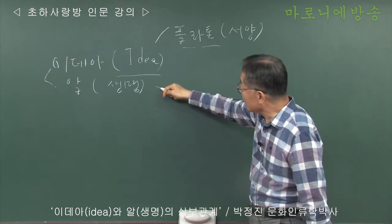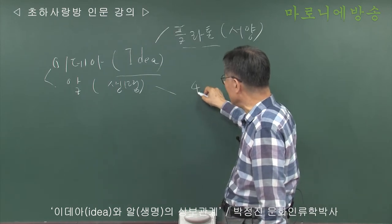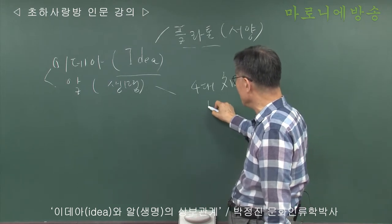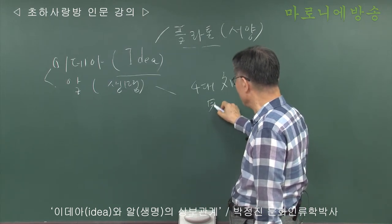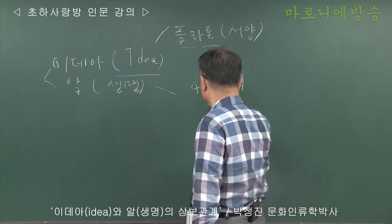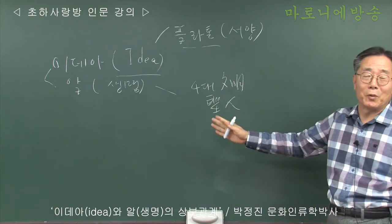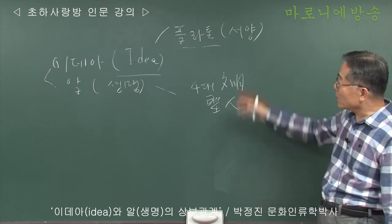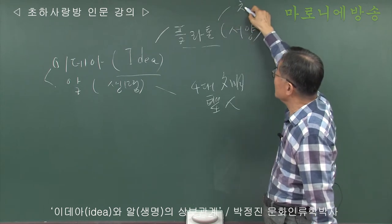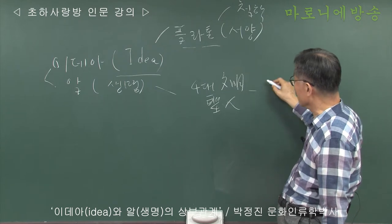그런데 인류의 4대 문명의 발상지 4대 문명과 여기에 4대 문명에 따른 성인들이 다 여기서 나왔죠. 철학의 소크라테스만이 그리스 쪽이죠. 이게 철학이고 이거는 이제 종교죠. 쉽게 말하면 이게 이제 종교가 되는 겁니다.